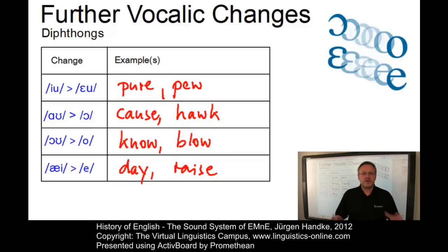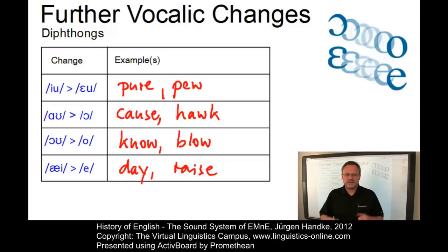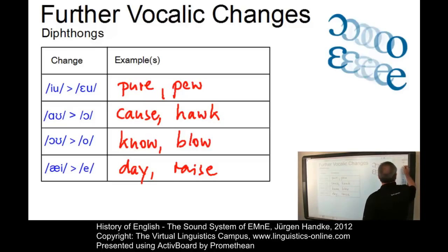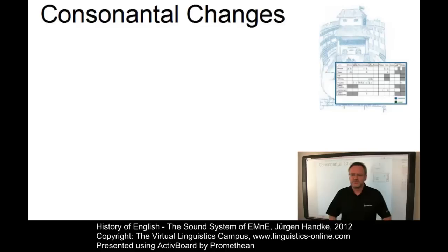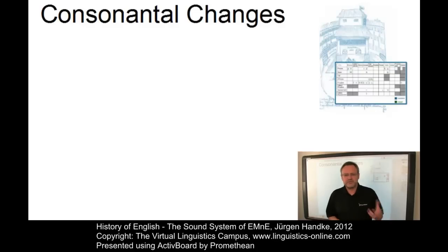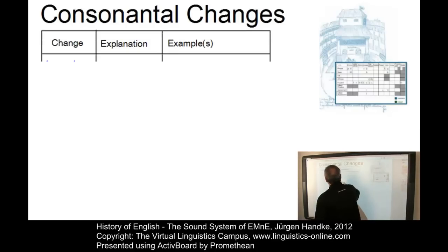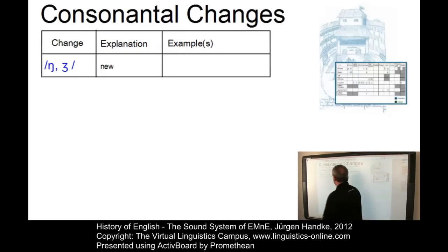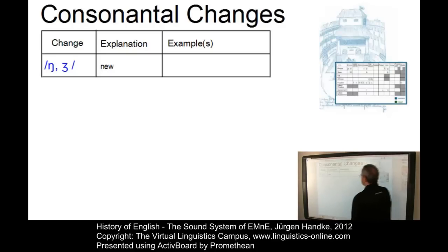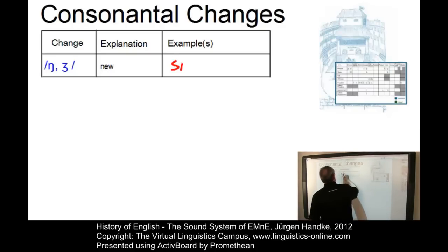So much for the vocalic changes that marked the transition from Middle English to Early Modern English. The changes in the consonantal system during the Early Modern English period were relatively small — only slight readjustments. The first change is the emergence of two new phonemes in words such as 'sing' and 'pleasure', which are now pronounced in the present-day English way.